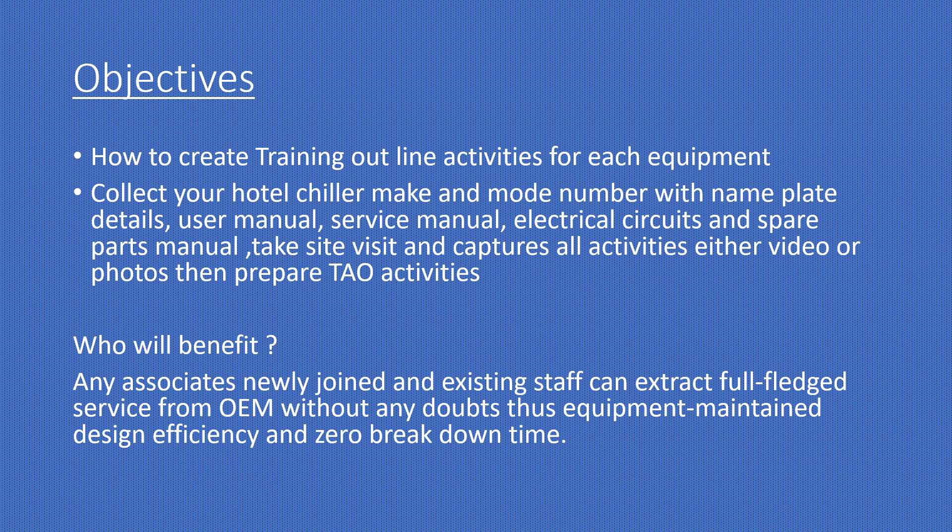These are our objectives. First, collect the make and model number of the particular equipment for which you want to prepare the training outline activities — for example, the user manual, service manual, electrical circuit, and spare parts manual. Also take a site visit and capture all the activities either on video or photos, then start to prepare the training outline activities. Any newly joined associates and existing staff can extract full-fledged services from the OEM without any doubt.